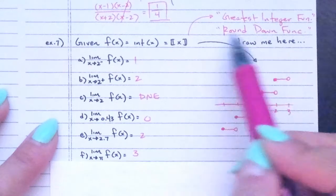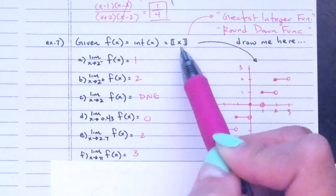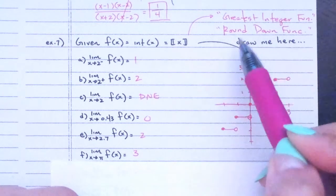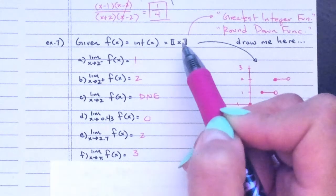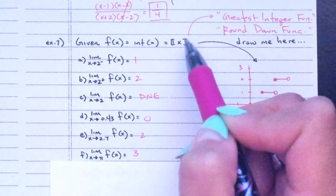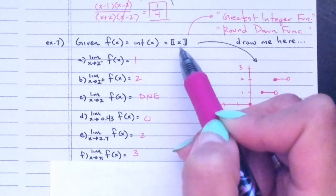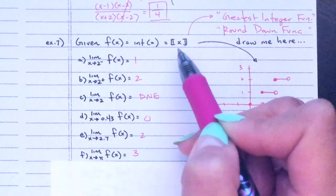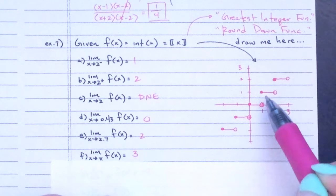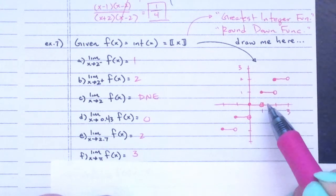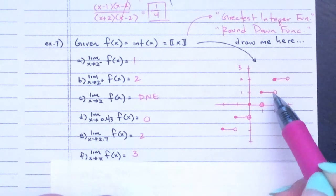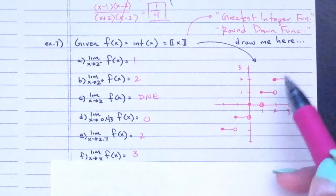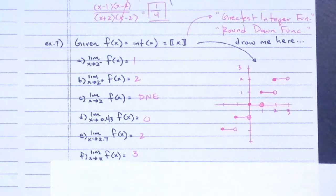The greatest integer function — also called the round-down function or step function — rounds down to the nearest integer. So the greatest integer of 2.5 is 2; 2.7 rounds down to 2. Everything from 1 up to but not including 2 rounds down to 1; when x hits 2, the y value jumps to 2. That's why the graph looks like steps.